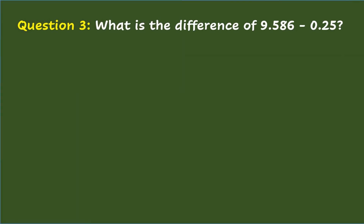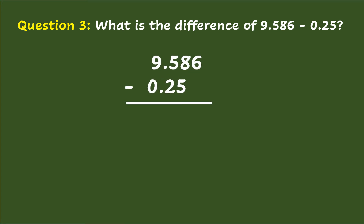Question 3: What is the difference of nine and five hundred eighty-six thousandths minus twenty-five hundredths? To subtract decimals, arrange the decimals vertically. Align the decimals based on the place value as well as the decimal points. Add zero to fill in the vacant place value in twenty-five hundredths. Then subtract the decimals just like in whole numbers, beginning from right to left. Starting with the thousandths place: six minus zero is six. Then eight minus five is three.